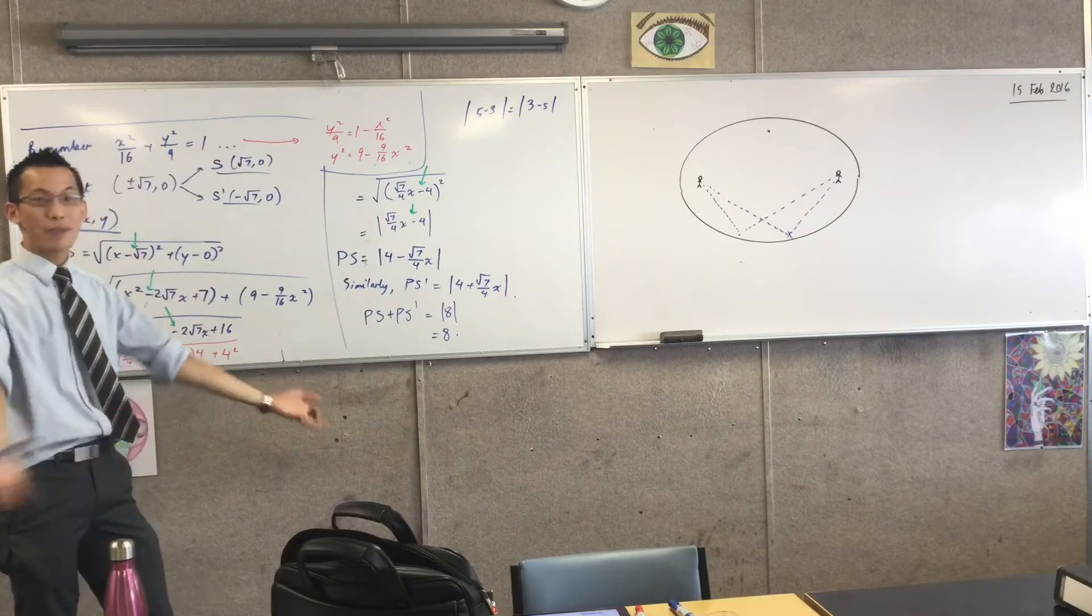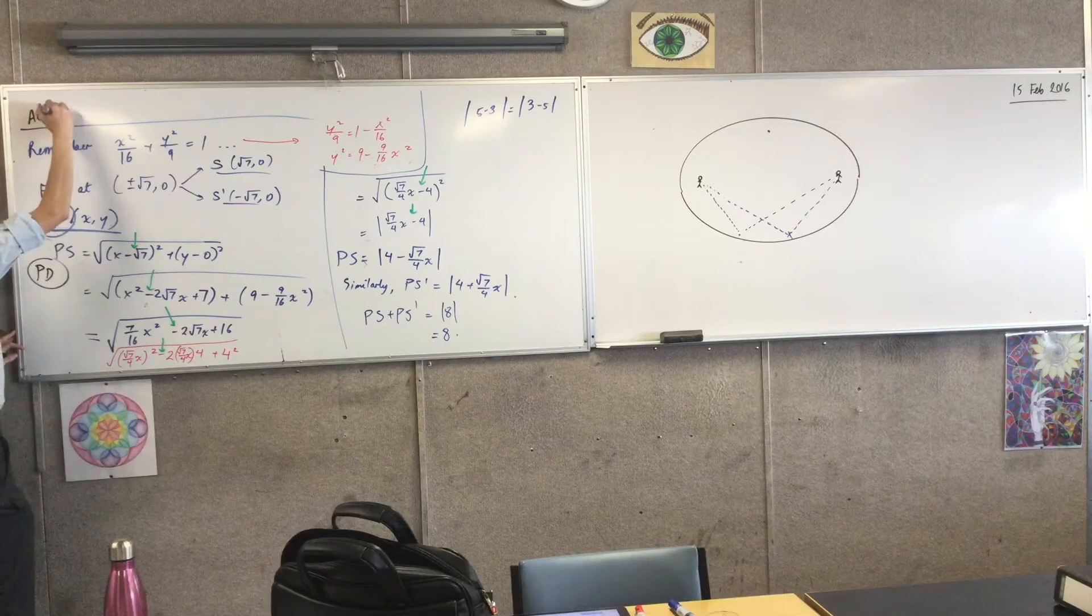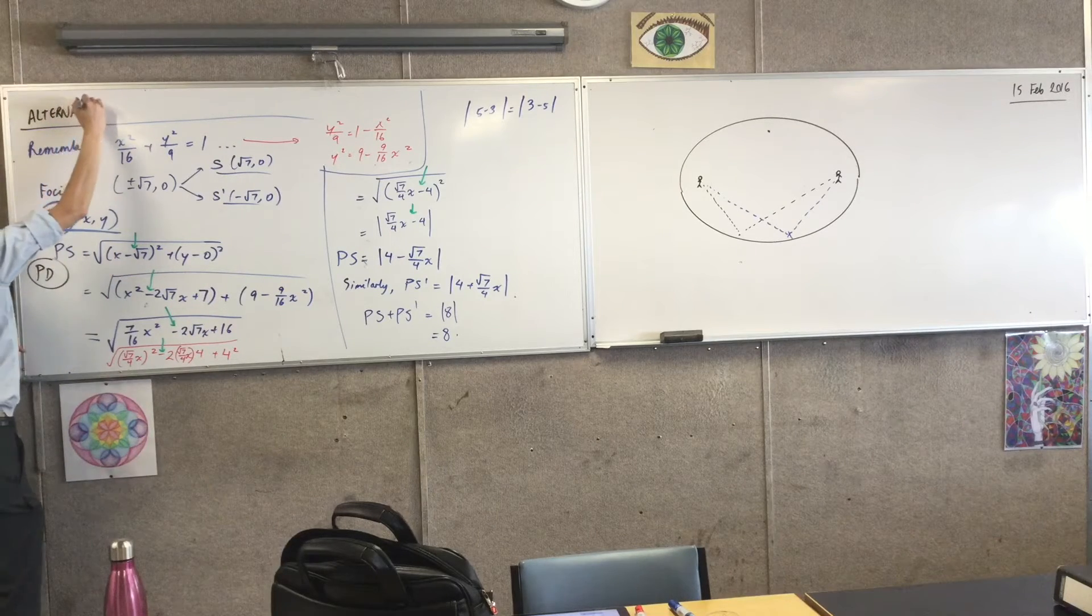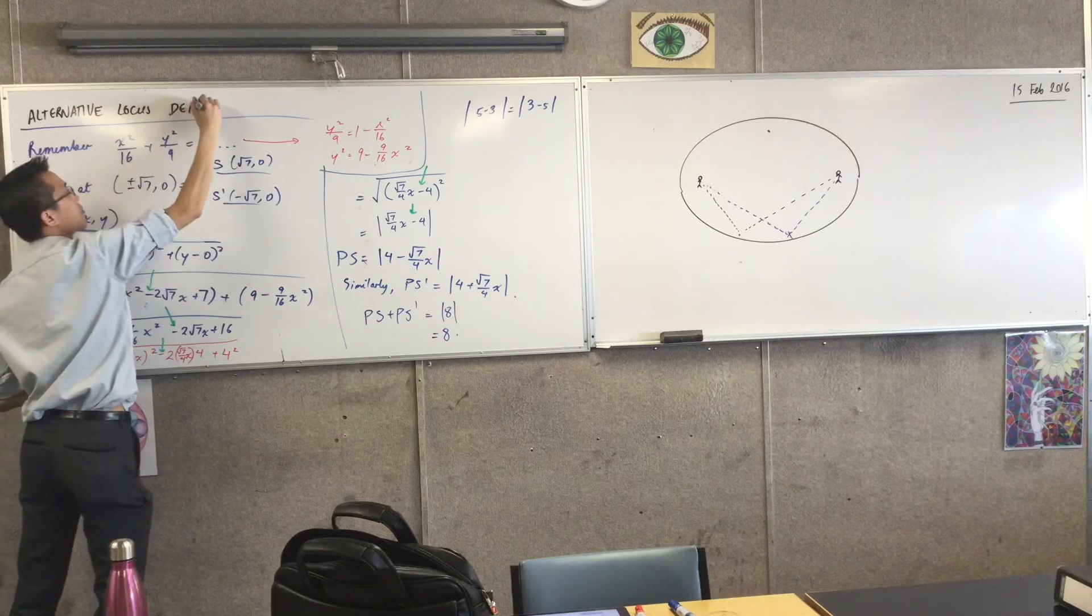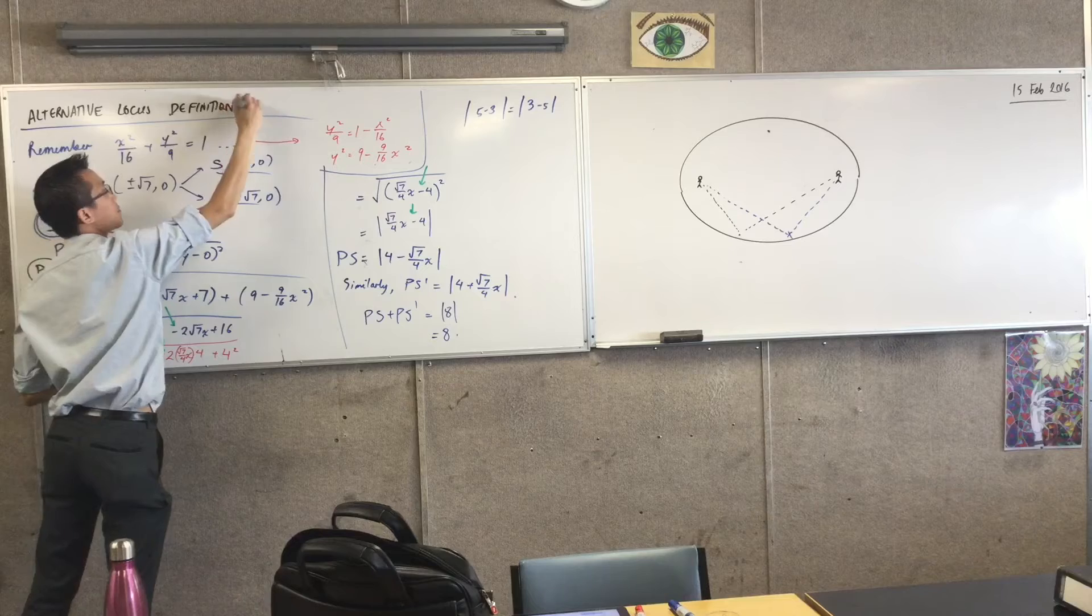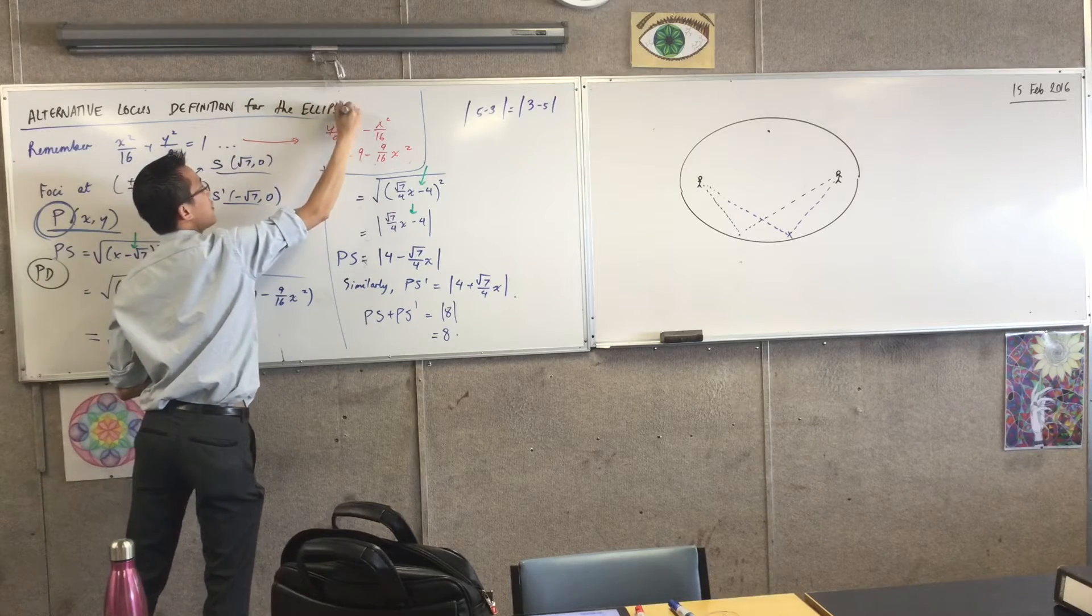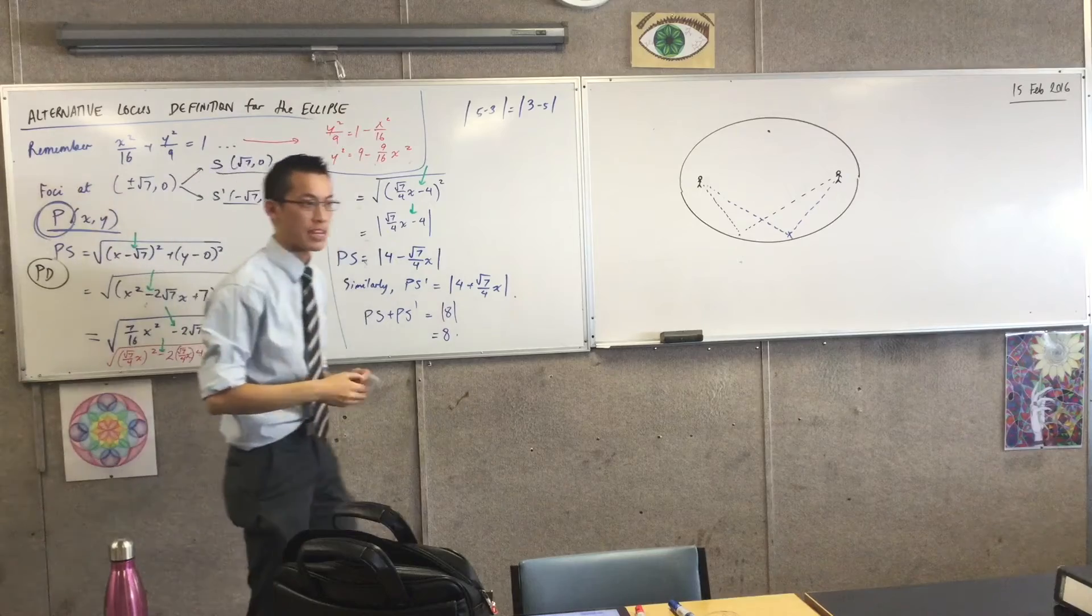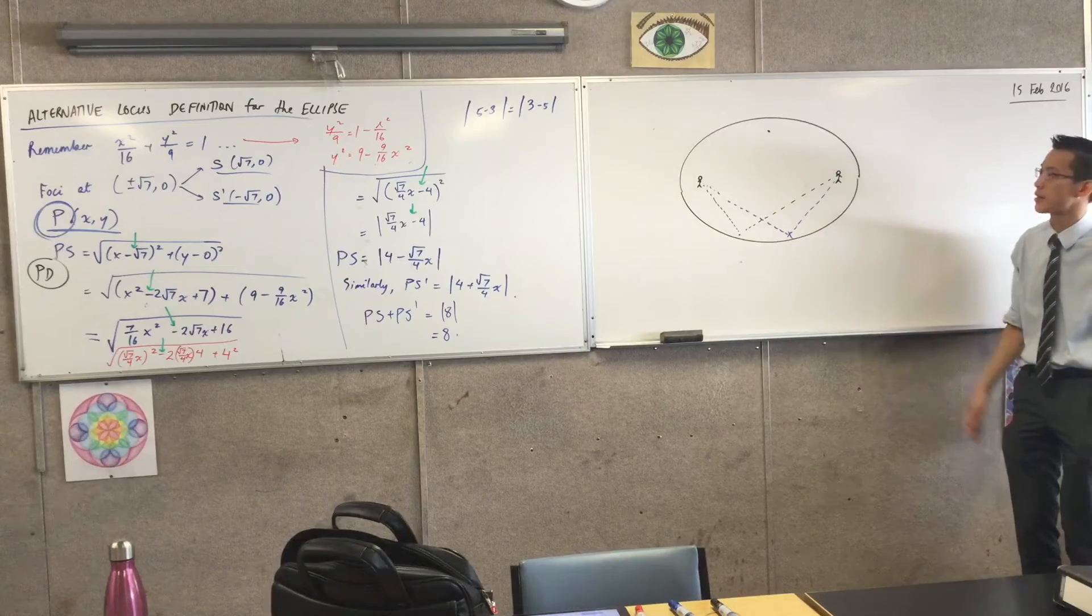So, therefore, now we can make a heading. What have we just established? What this is, is an alternative locus definition for the ellipse. It is a whole different way of arriving at the equation of an ellipse, and at noticing one of its most critical properties.